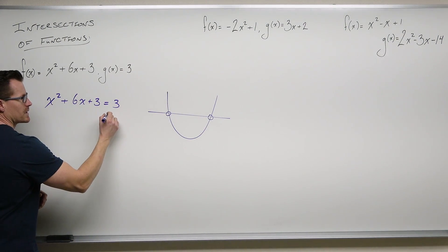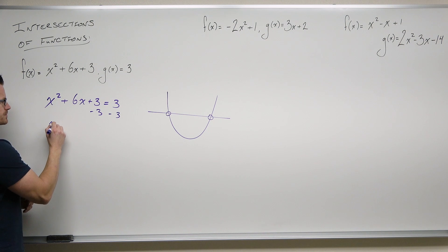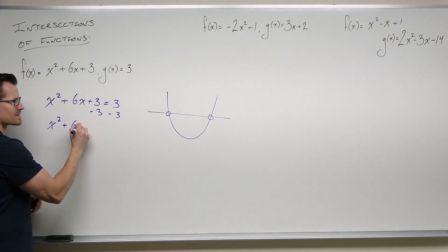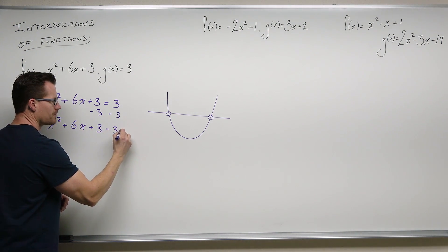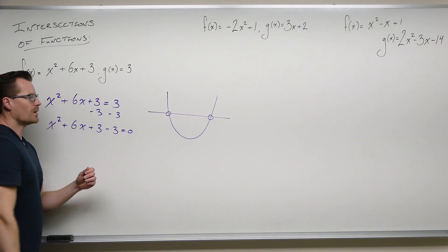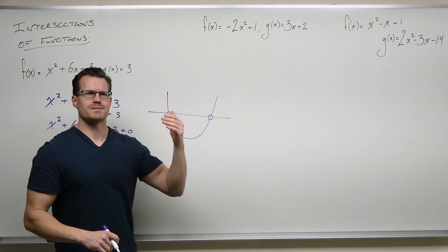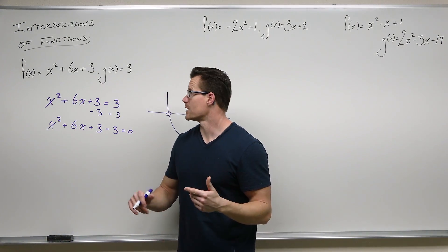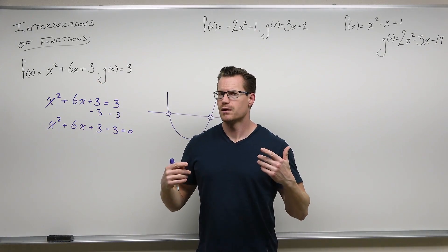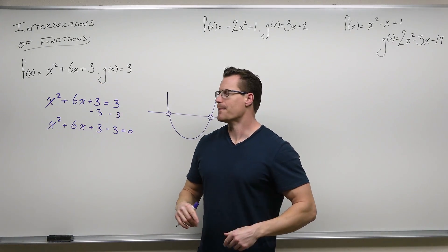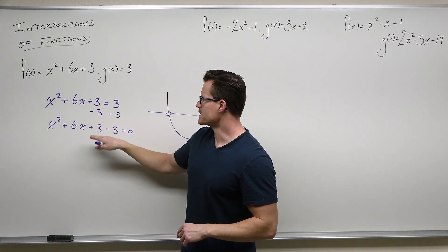So we'd subtract three, and I want you to understand what happens when we do that. My original parabola is x squared plus 6x plus 3 — it's got a y-intercept of three. If I plug in zero, you can see that. Now what happens when I subtract the three, this constant? Basically, it shifts this parabola down.